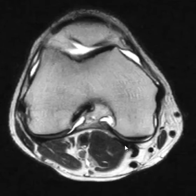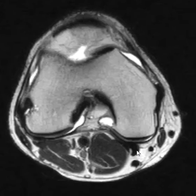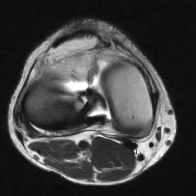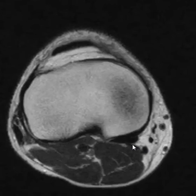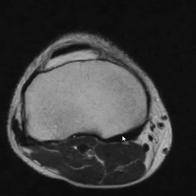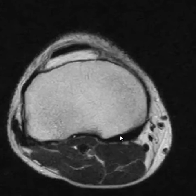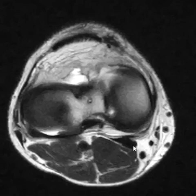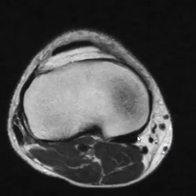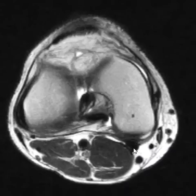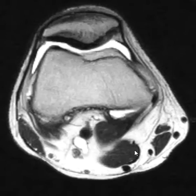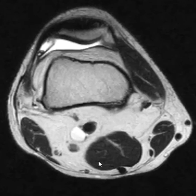Here are the semimembranosis and the gastrocnemius, and there's that bursa where you see popliteal cysts. As the semimembranosis goes down, it broadens out right here and attaches to the posterior medial tibia — very broad. This is where the joint capsule and the semimembranosis come together. Following back up, we can see the semimembranosis muscle belly.